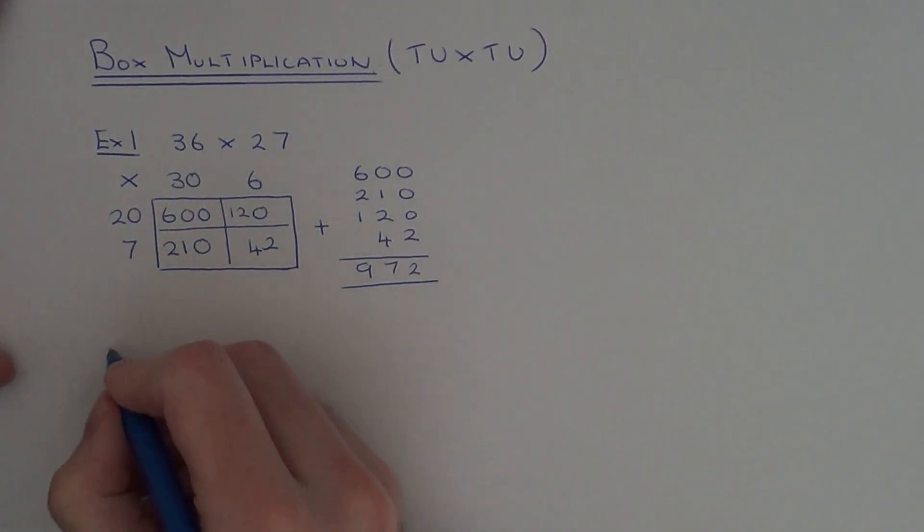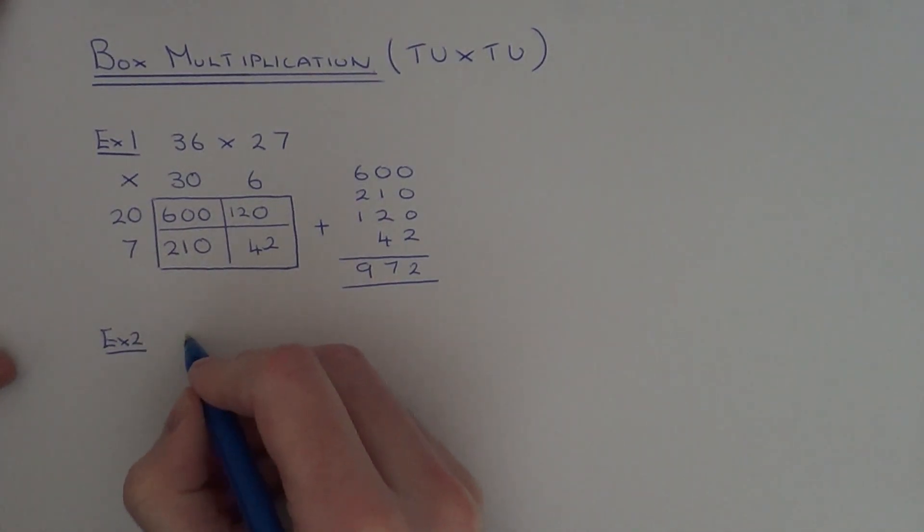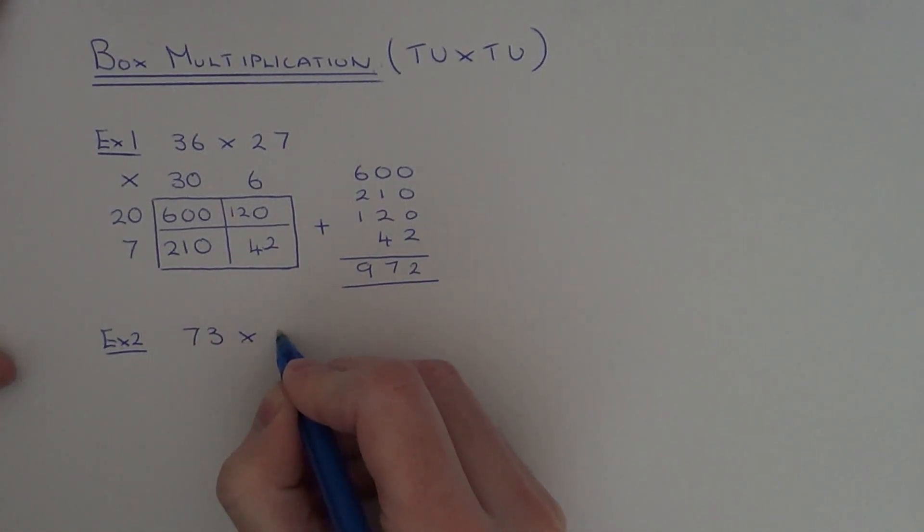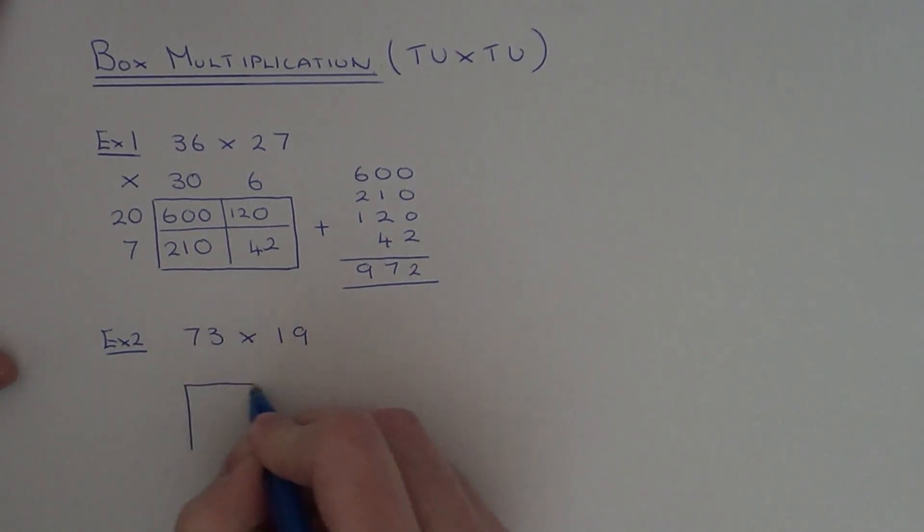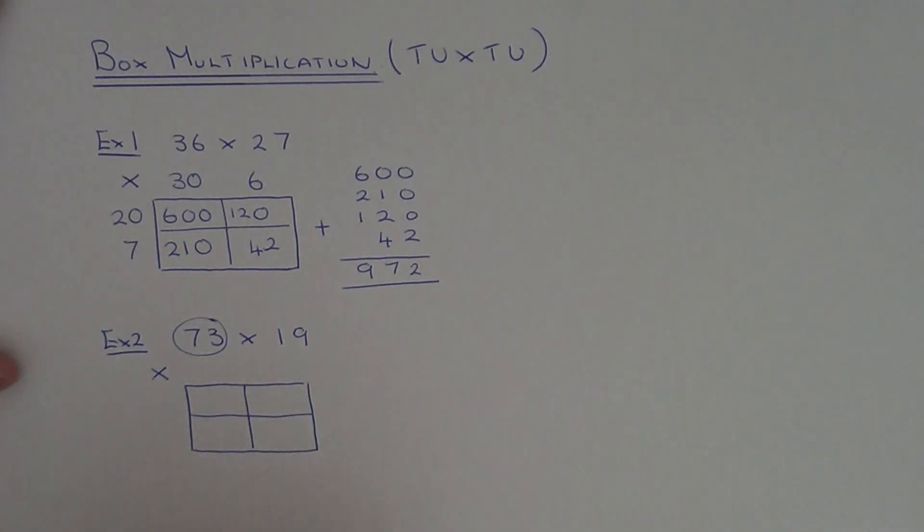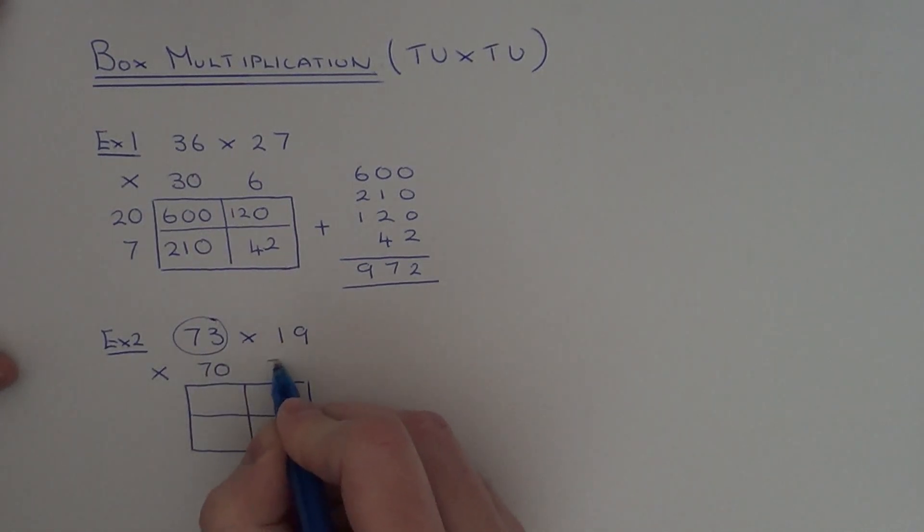Let's do another example. So example 2. This time let's work out 73 times by 19. So again draw yourself a box. Put a times sign in the corner. So our first number that we have is 73. If we write this across the top, we've got 70 and 3.